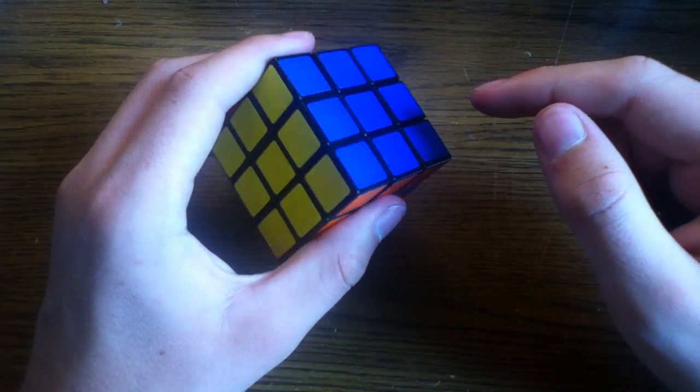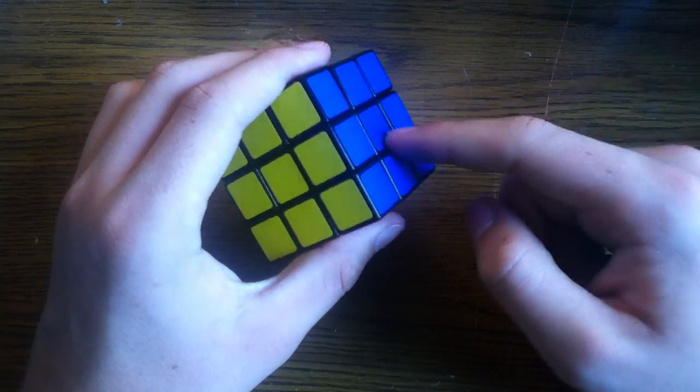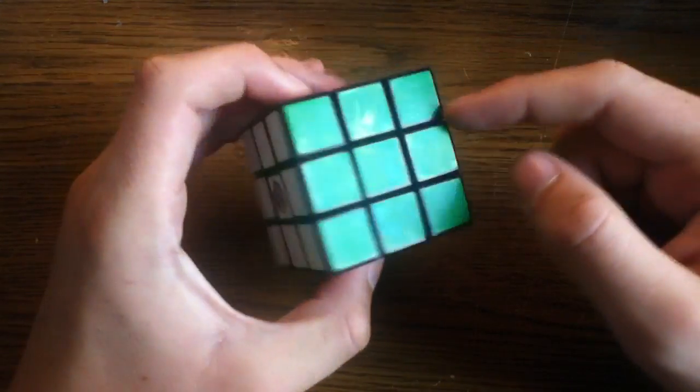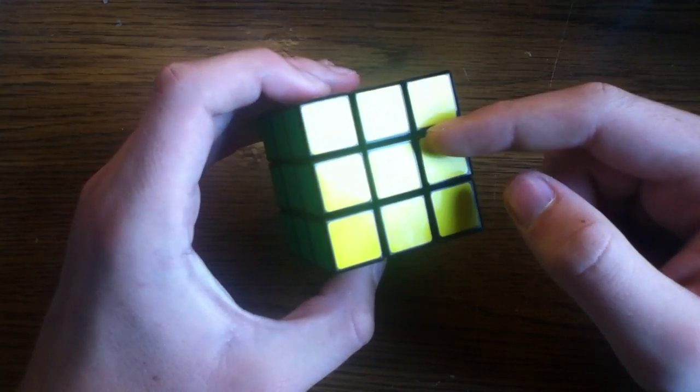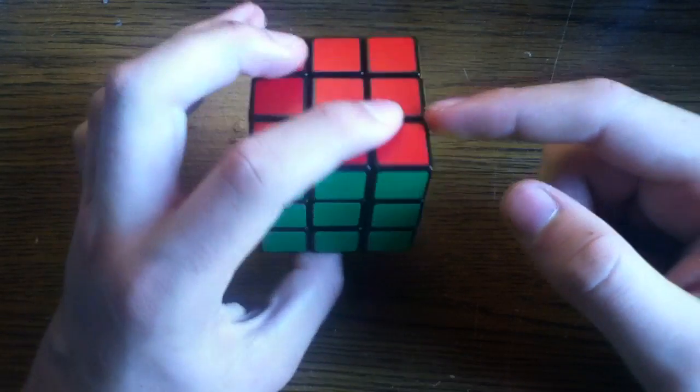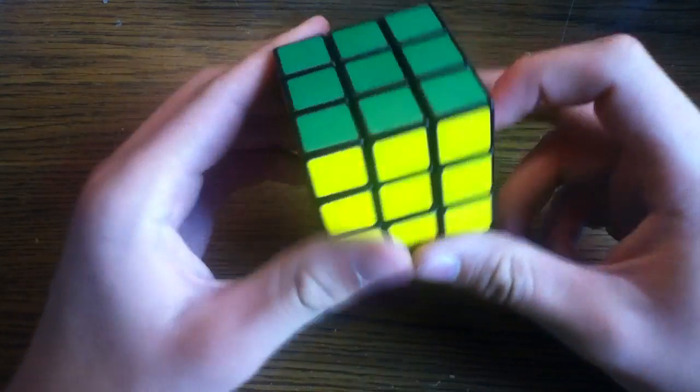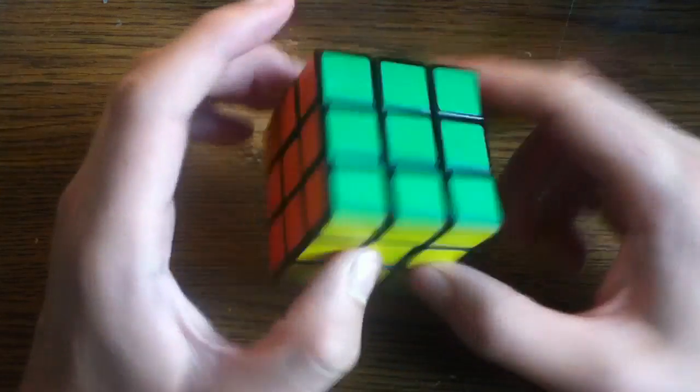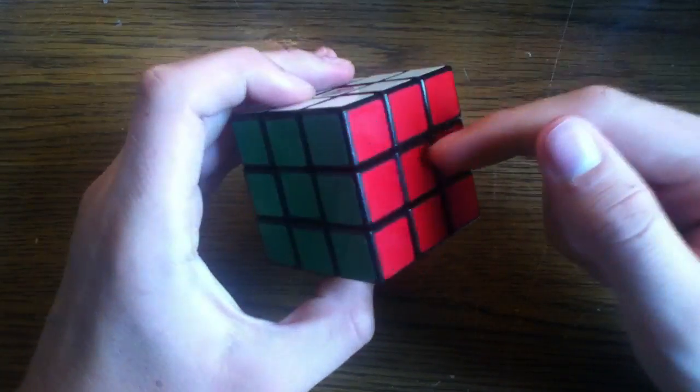An easy way to remember this is that colors that are kind of similar, like blue and green, are always going to be opposite of each other. And white and yellow are also pretty similar, and so is orange and red. This can help you when you're solving it, so you don't have to keep looking around for the center pieces, because you know where they'll be.